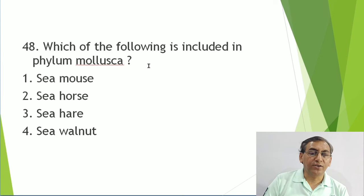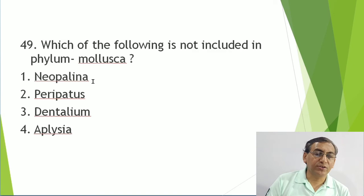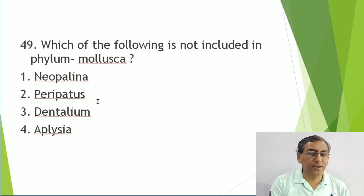Which is included in phylum Mollusca: sea mouse (Aphrodite) is in Annelida, sea horse (Hippocampus) is in Pisces, Aplysia is in Mollusca, sea walnut is in Ctenophora. Which is not included in Mollusca: Neopilina is a connecting link between Annelida and Mollusca, so it is in Mollusca. Peripatus is in Arthropoda. Dentalium (elephant tusk) is in Mollusca. Aplysia is in Mollusca. So Peripatus is not included in Mollusca.